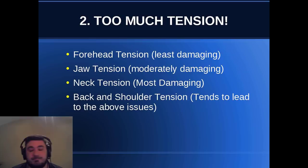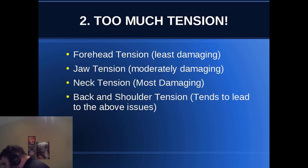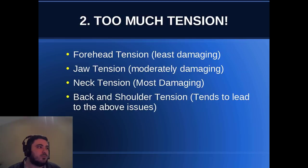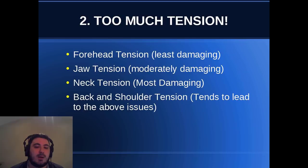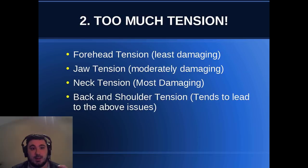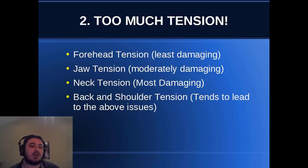Back and shoulder tension is more of a posture-related issue. People with really bad posture who are bent over get really sore in their backs and shoulders, and they compensate by tightening up their neck or getting top-heavy in their breathing. Back and shoulder tension can also affect the efficiency of the breathing mechanism. To rank them: neck tension is definitely the most damaging, jaw tension is probably the second most damaging because it tends to go hand in hand with neck tension, forehead tension is probably the least damaging — though still something to avoid — and back and shoulder tension, while not super damaging on its own, makes everything above it more difficult.